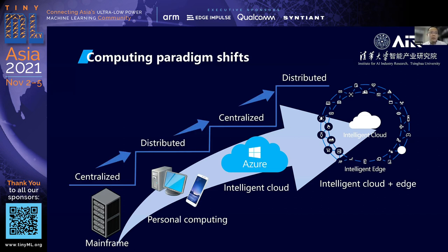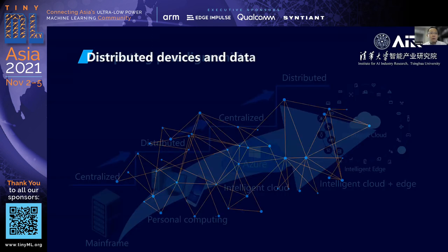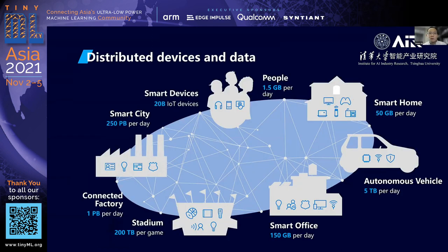If we look back, we can observe a very simple pattern: the computing paradigm shift between centralized computing and distributed computing. From the centralized mainframe computing to the distributed personal computing, and then to the centralized cloud computing again. With the advances of AI, we have not only cloud computing but intelligent cloud computing. So today the computing paradigm has become distributed again — we have not only the intelligent cloud but also the intelligent edge. In the era of AI computing, it's really about distributed devices and data.